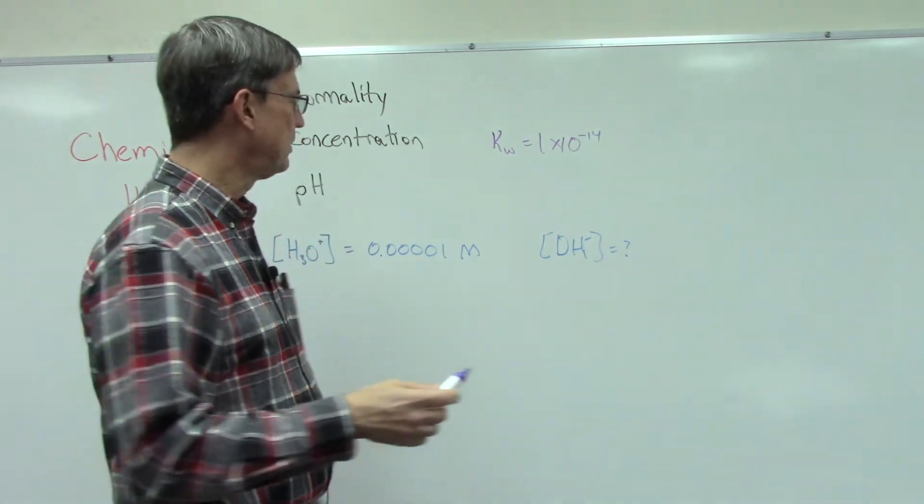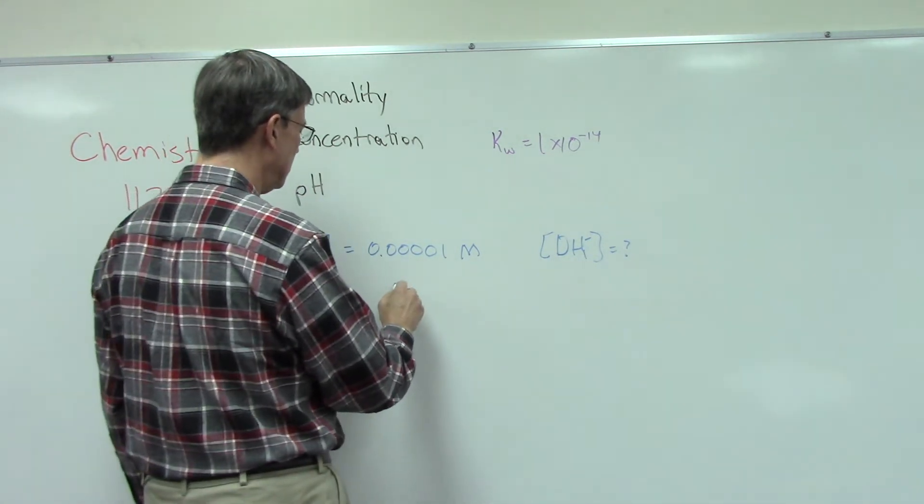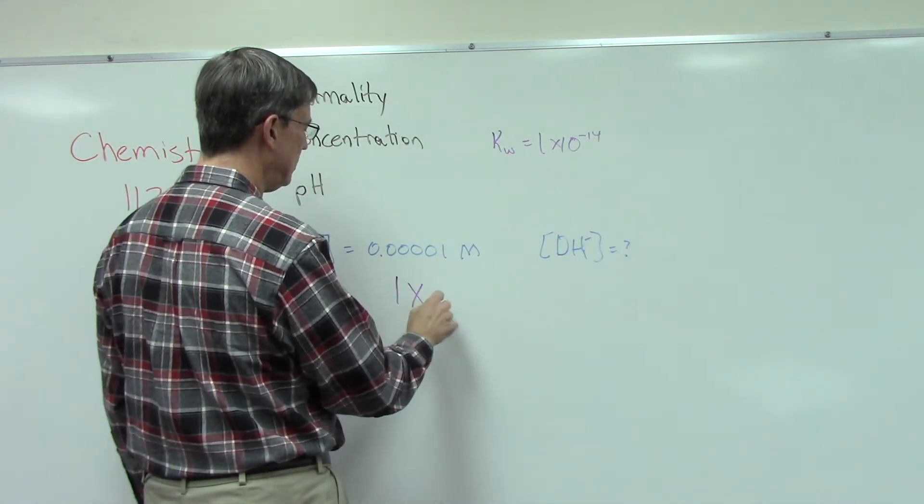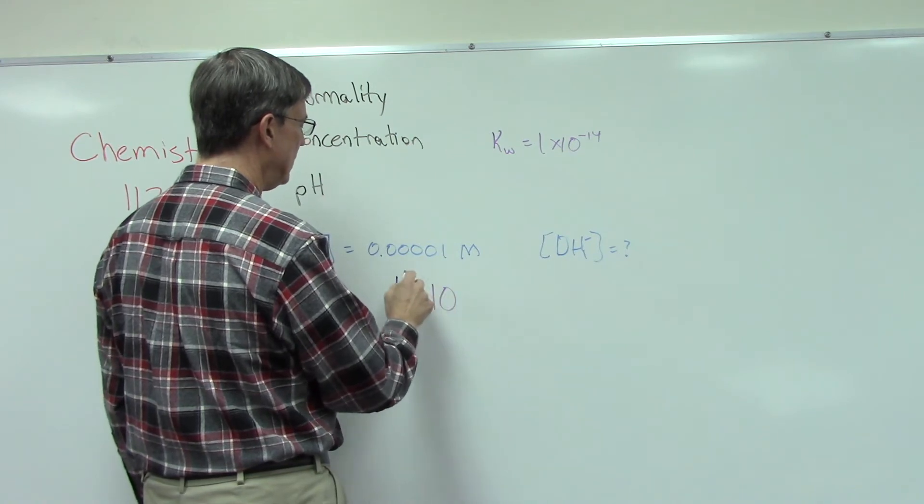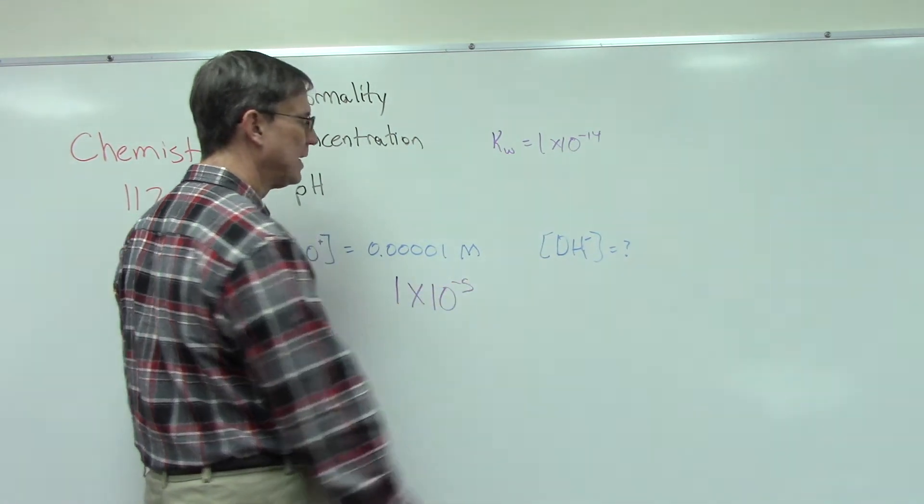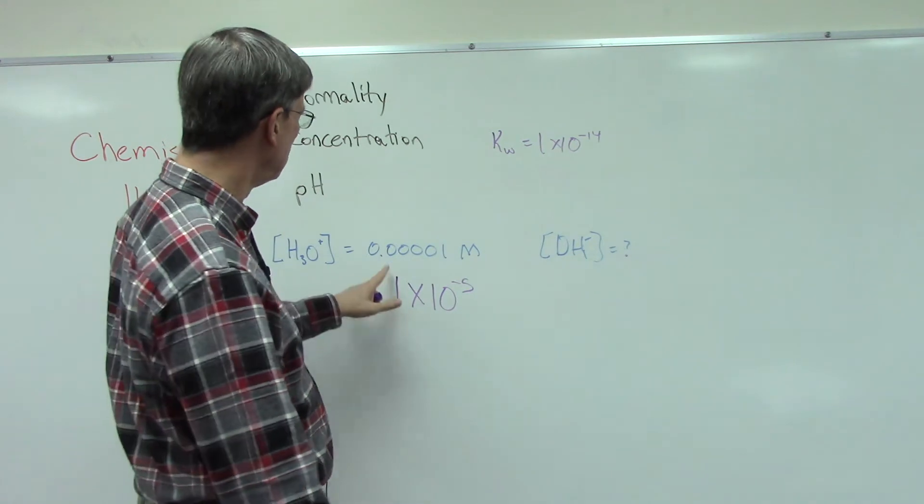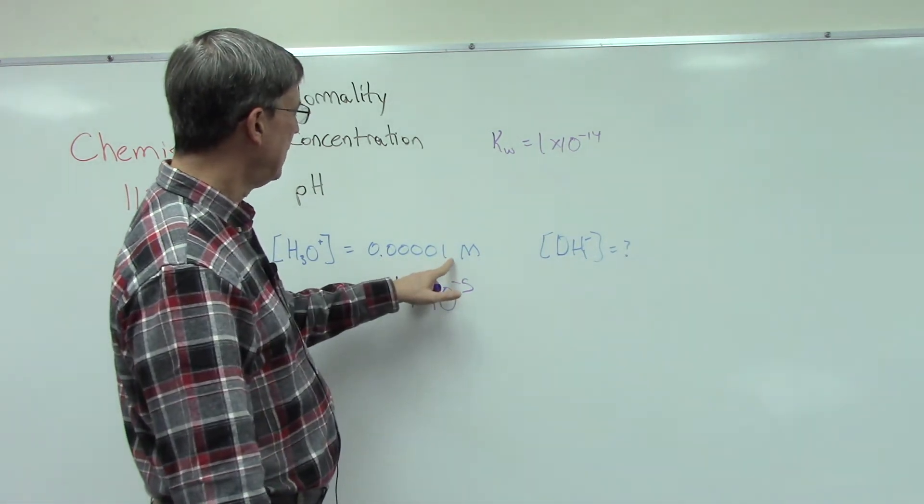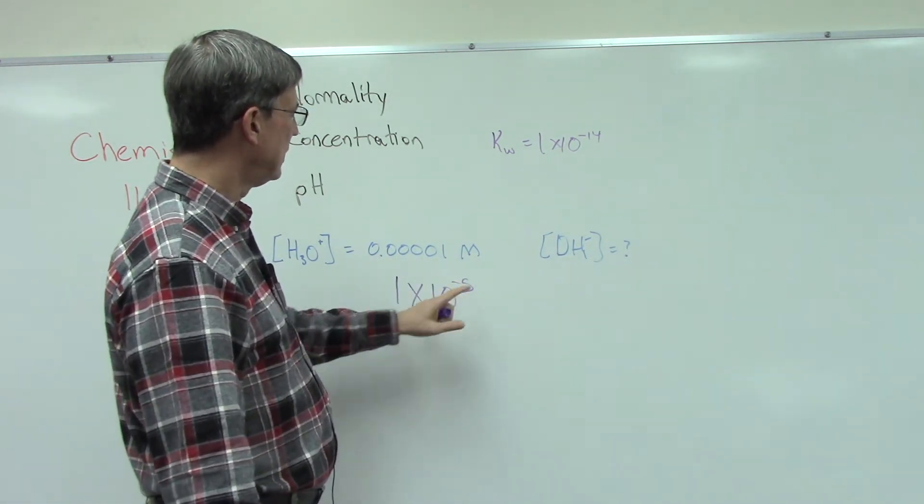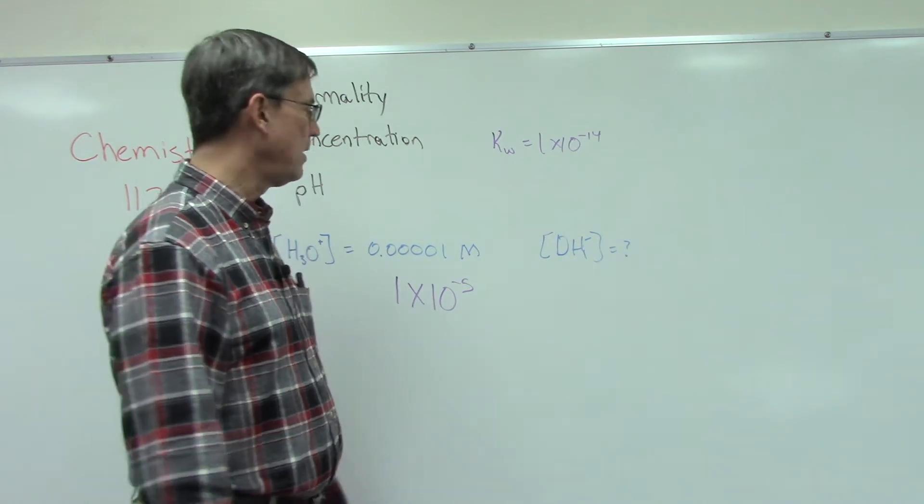Now the first step in doing these types of problems is we always want to write this in scientific notation. So this would be 1 times 10 to the negative fifth. You move the decimal here behind the one and that's why it's to the negative fifth. We moved it five places.